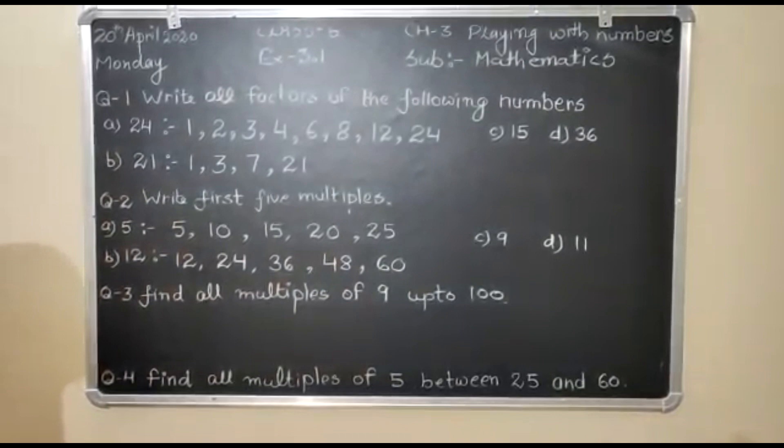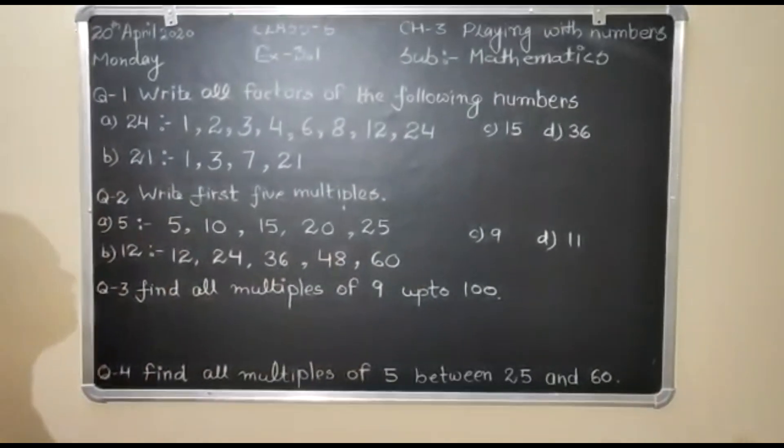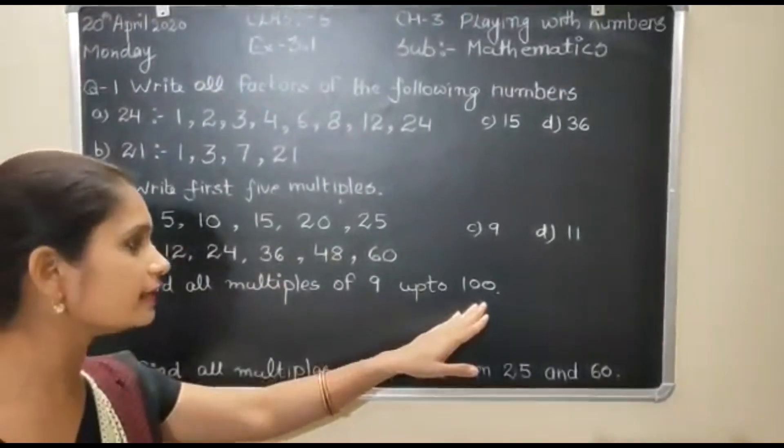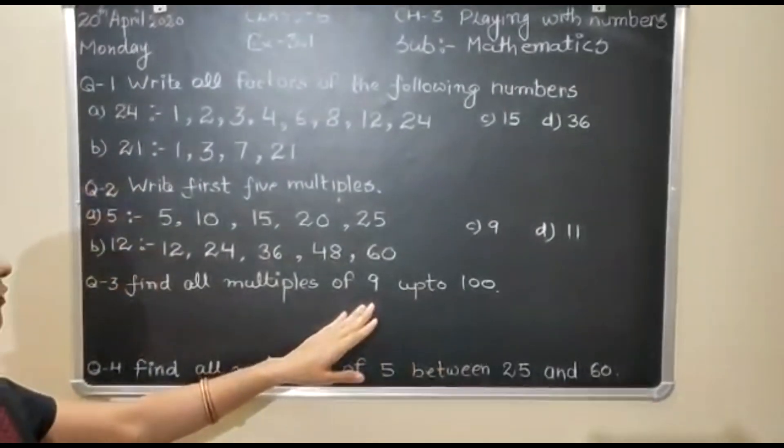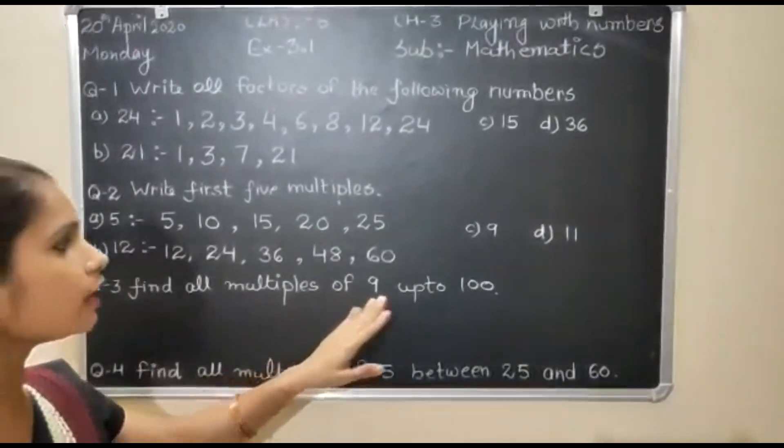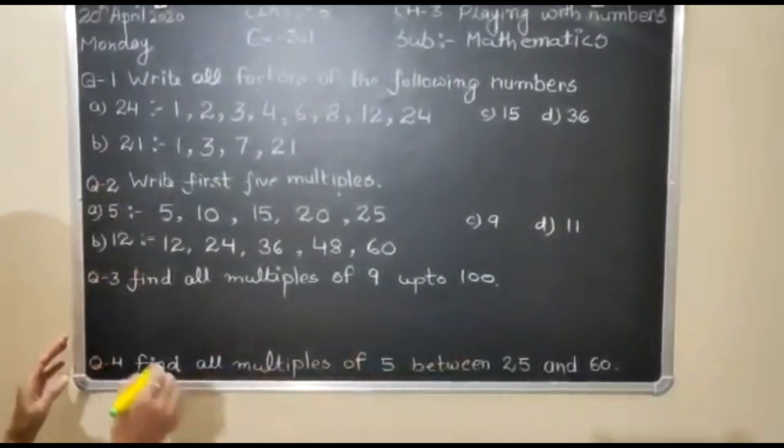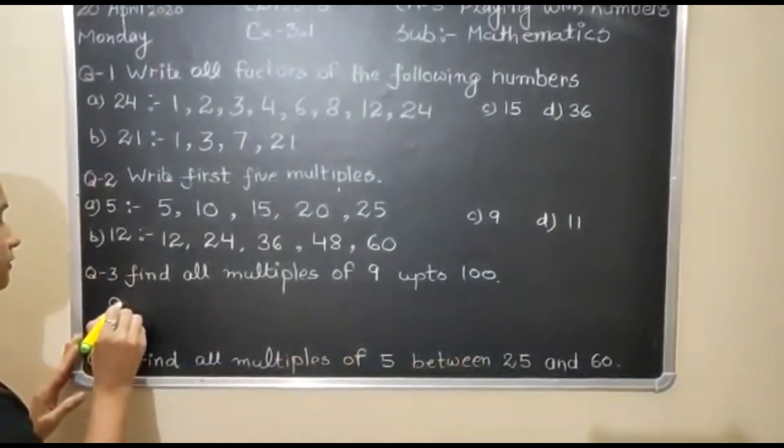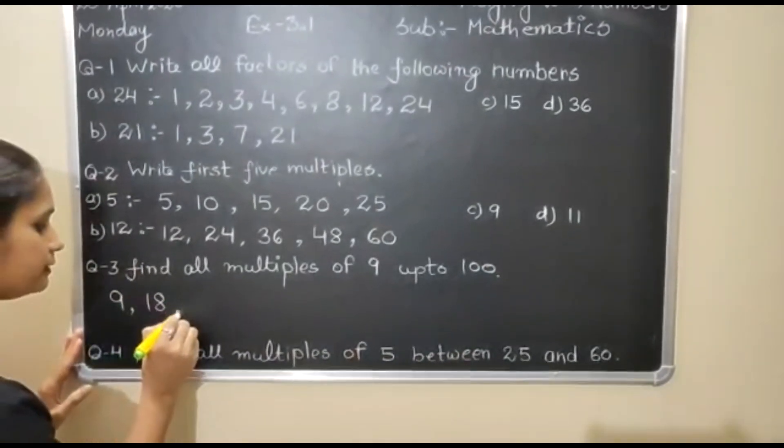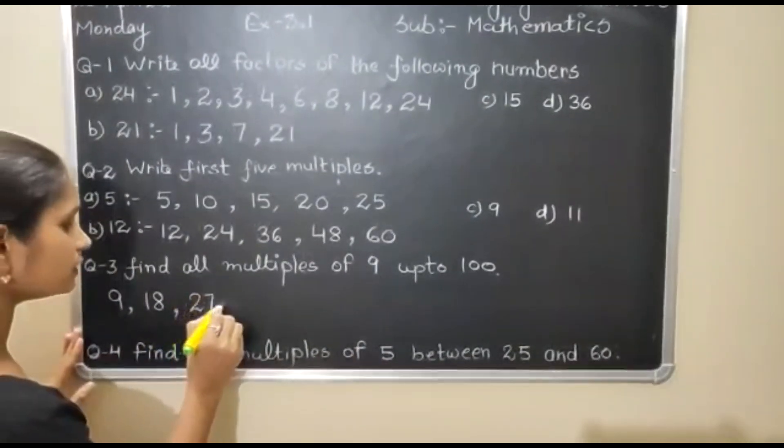Clear students, question number 3, find all multiples of 9 up to 100. In this question, you have to write multiples of 9 up to 100. It means 9 ones are 9, 9 twos are 18, 9 threes are 27.